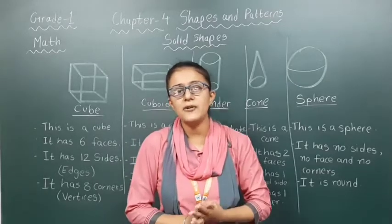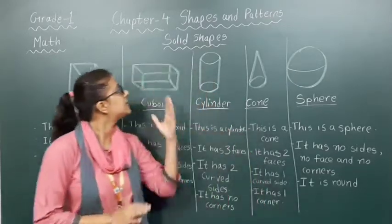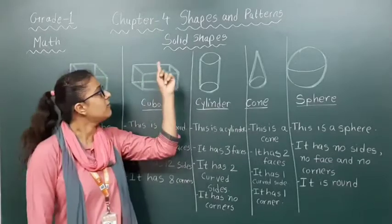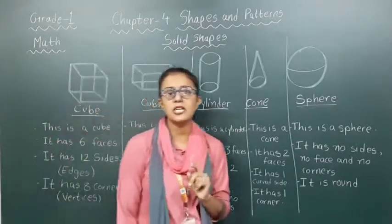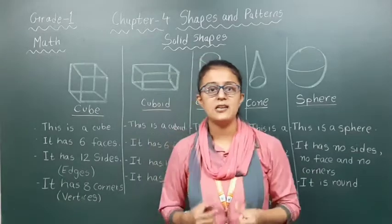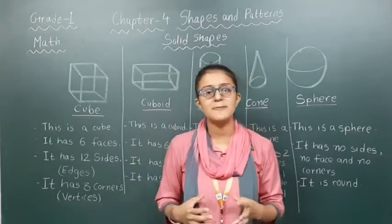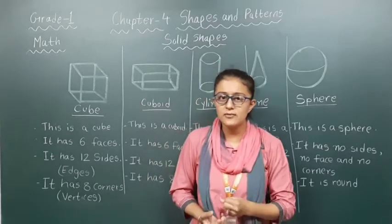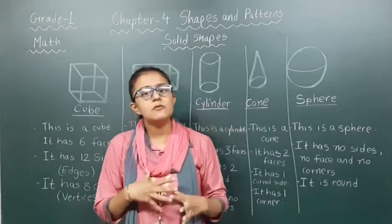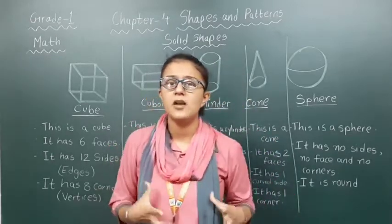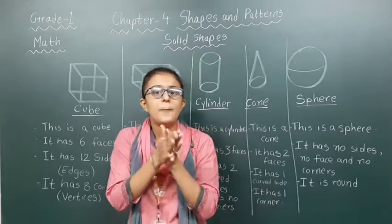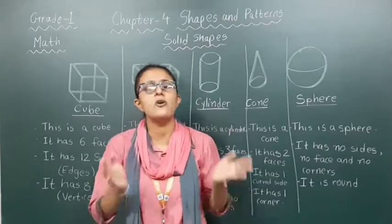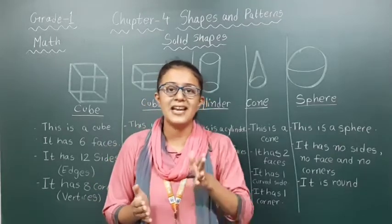Now today we are going to learn about solid shapes. Solid shapes are the shapes which are swollen, i.e. fully three-dimensional. Let's quickly move towards some of these solid shapes which are already mentioned in your textbook, Term 1, page number 60. You can open it and see.